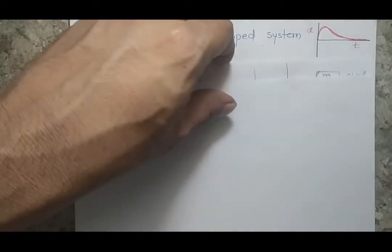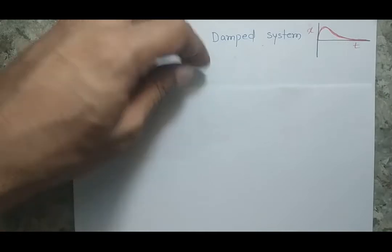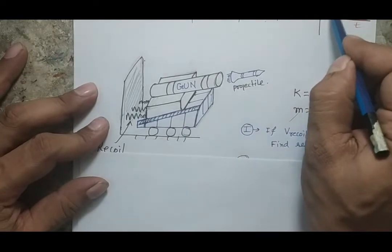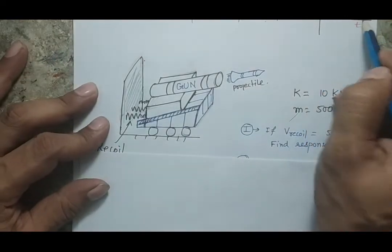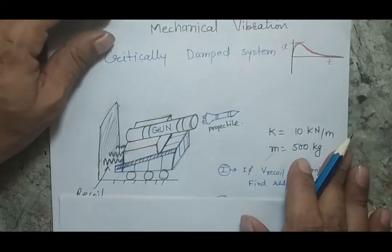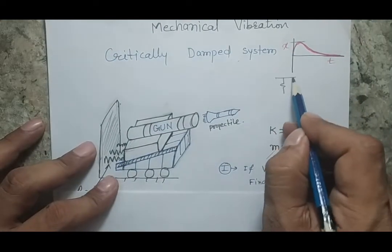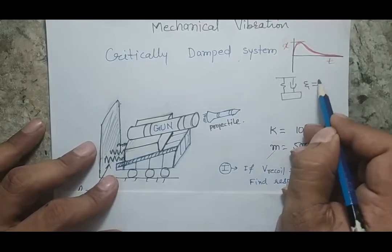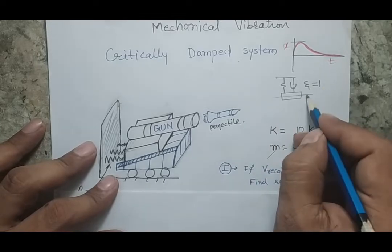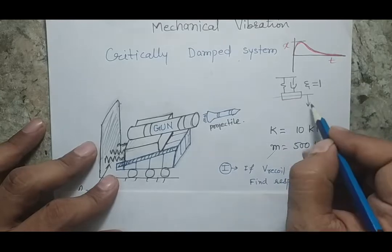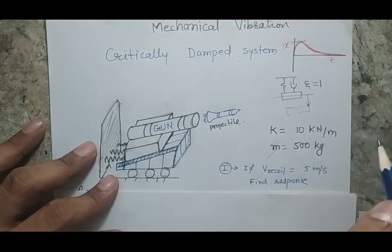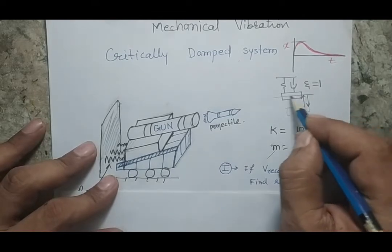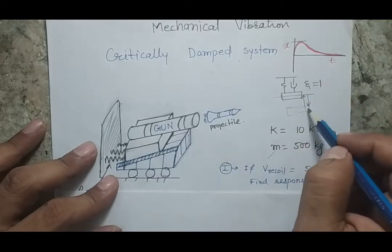But today we are dealing with a critically damped system. In a critically damped system, if you give some initial displacement, the system will not oscillate — it will reach back to the original position. For example, in a spring-mass system where damping is very high and zeta equals 1: if this is the mean position and I give a 10 centimeter displacement, when I release the body it will go back to the mean position but will not cross it. If the system is critically damped, it will reach the mean position in minimum time.